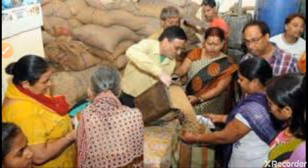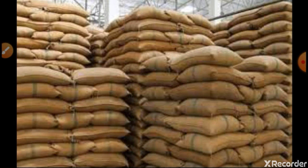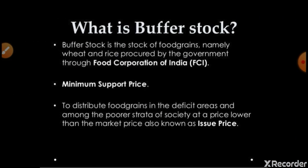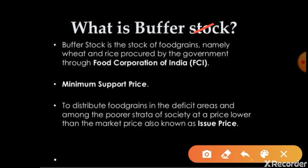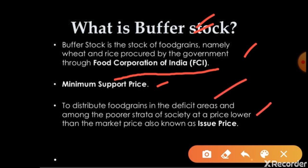Regarding buffer stock: the government purchases food grains from farmers and stocks them. Buffer stock is the stock of food grains — namely wheat and rice — procured by the government through the Food Corporation of India. The price at which the government distributes food grains to deficit areas and poor strata of society, which is lower than the market price, is called the issue price. The price at which the government purchases food grains from farmers is called the Minimum Support Price.